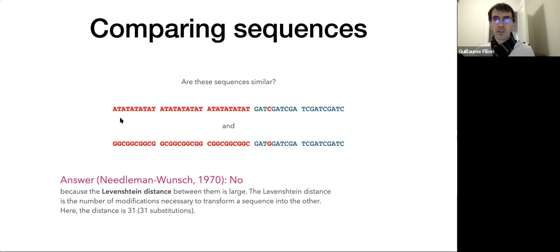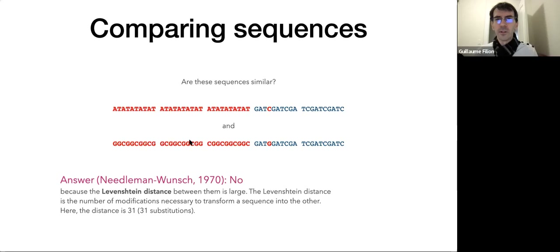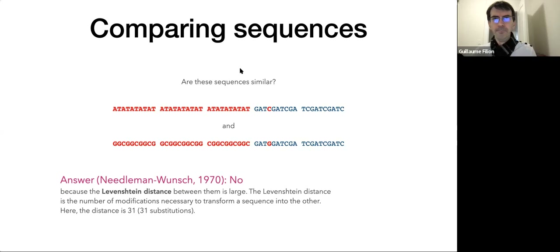You start from one sequence and count how many changes you need to make to transform it into the second. If you need zero changes, the sequences were identical. If you need many changes, they were not so close together. These changes can be changing a nucleotide, removing it, or adding a nucleotide. Here the distance is 31 substitutions — for a sequence that's 50 nucleotides, that's 62% of the nucleotides having to be changed. Needleman and Wunsch would say these two sequences are really not close at all.